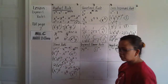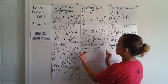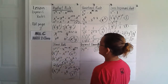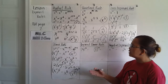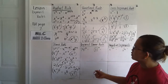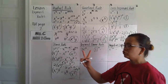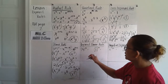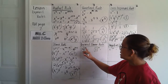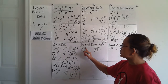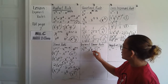Next, expanded power rule. This is similar to the power rule, but with more variables. For example, x times y, all raised to m — you distribute the exponent to each base, giving x raised to m times y raised to m.